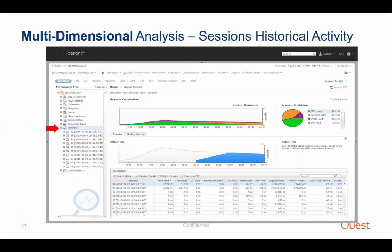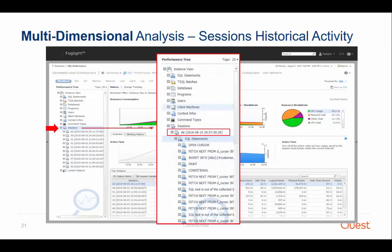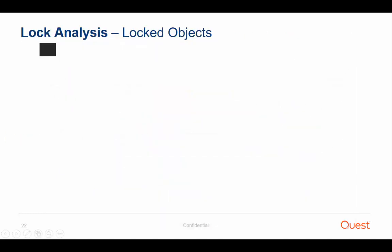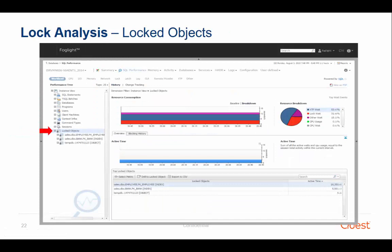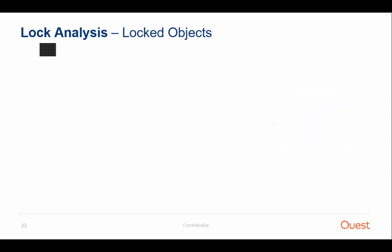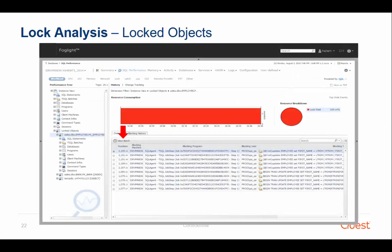The sessions dimension allows you to review the activity of each session, uniquely identified by the SPID and login time. You can further drill down to any dimension, such as SQL statements, to review those functions that were executed by the selected session. The locked object dimension allows you to start the lock analysis investigation by first examining the locked objects themselves in order to easily identify the root cause for the locks in the system. Clicking on the object associated with the highest lock duration reveals the lock duration and the details of each session that was blocking it.